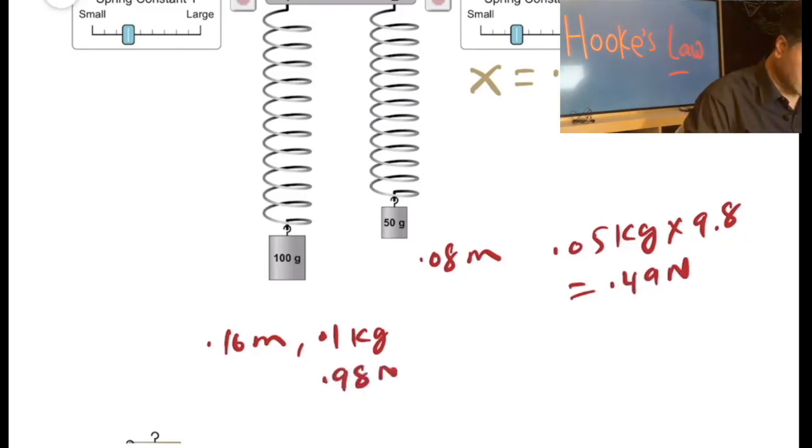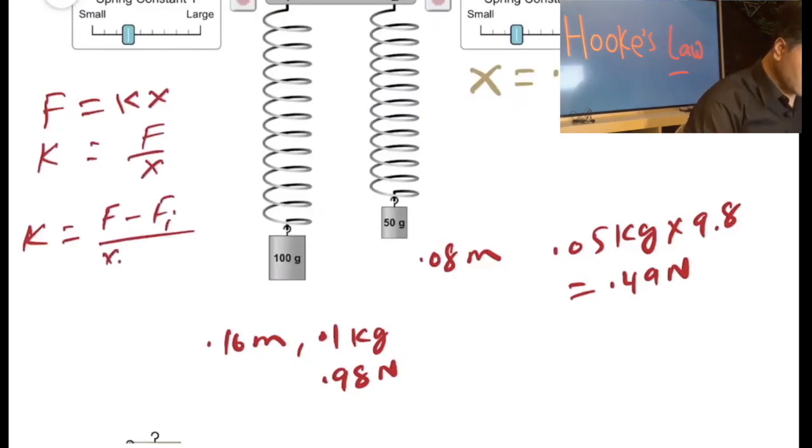So what are you going to do with this? We're going to use Hooke's Law. What is Hooke's Law? F is equal to KX. That means K is equal to F over X, over X final minus X initial.